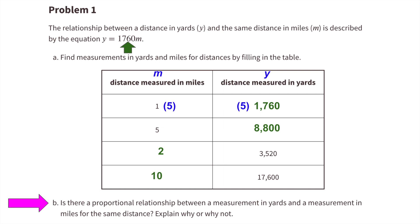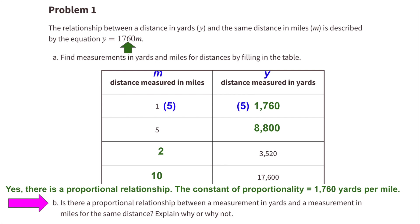Part B: Is there a proportional relationship between a measurement in yards and a measurement in miles for the same distance? Explain why or why not. The distance increases by 1,760 yards for every mile. Yes, there is a proportional relationship. The constant of proportionality is 1,760 yards per mile.